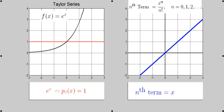The second term in the series is x, which, when added to the first, produces the tangent line at x equals 0, 1 plus x.